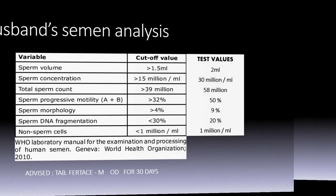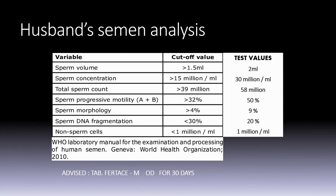They may also question you about why the husband's semen analysis was ordered. You can answer that it was tested to know the actual reason of the infertility in the preliminary analysis. They may also ask why tablet Fortis was advised. You can answer that it was advised to increase sperm motility, development, and maturation of spermatogonia.